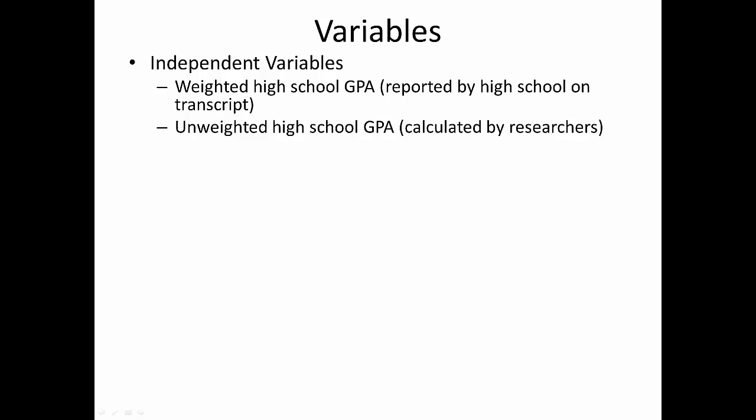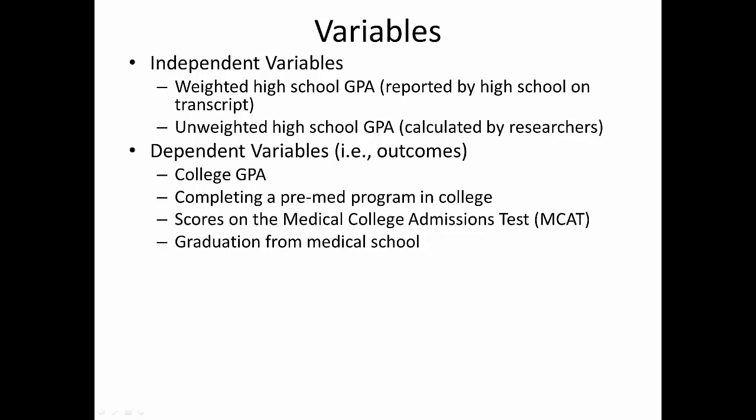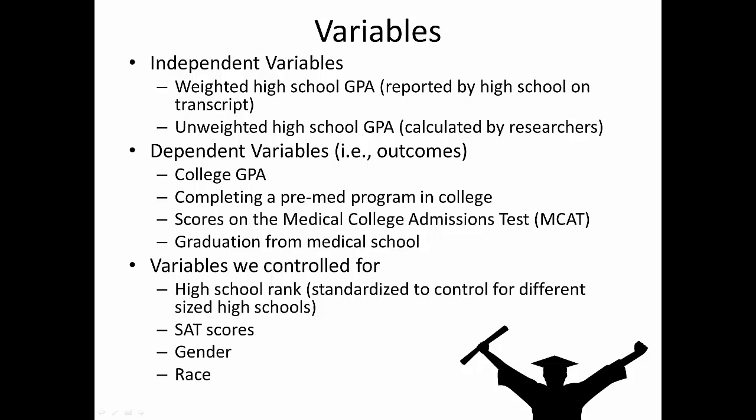We defined college success in four ways: college GPA, completing the undergraduate pre-medical education program, scores for the Medical College Admissions Test or MCAT, and graduating from medical school. We controlled for the student's high school rank, which we standardized to also control for different sizes of high schools, their SAT scores, gender, and race. These variables were controlled because we didn't want them confounding our results when we tried to figure out which type of GPA was more effective at predicting college success.